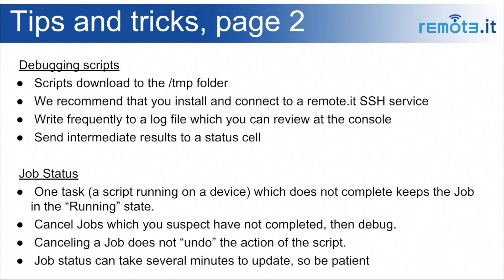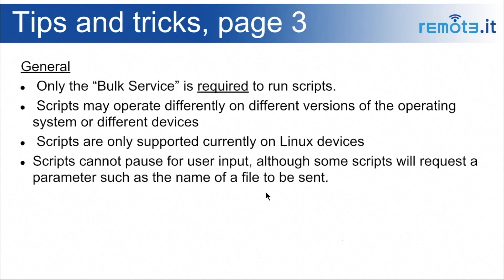Regarding job status: one task — meaning a script running on a device — that does not complete will keep the whole job in the running state. If a job stays running for a long time, click on the job status to see if one of your devices has failed. If you suspect something is stuck, cancel the job and debug what happened. Note that canceling a job does not undo the action of the script — if you had 10 devices selected and canceled after three ran, those three ran and the others didn't. The job status can take several minutes to update, so be patient. Scripts are only supported on Linux and cannot pause for user input.